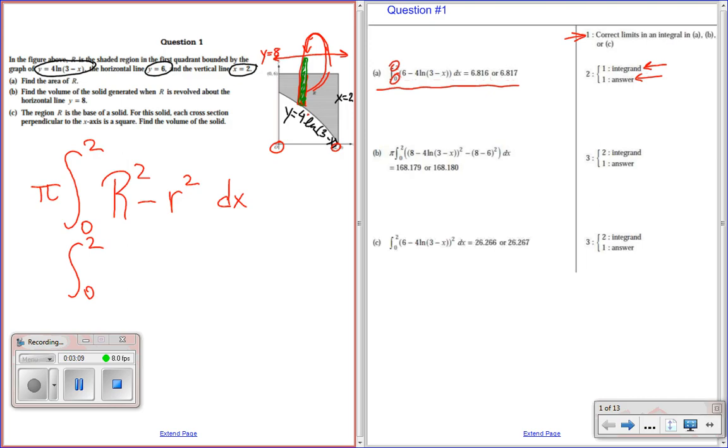Big R squared is going to be upper minus lower. So, it's going to be 8 minus 4 natural log of 3 minus x. That whole thing's squared. And then the small square is just this section in here. The small section is this section right in here. That's the part we're taking out. So, we don't want to include that in the volume. So, that's the small R. So, it's 8 minus 6 squared. And it's all in respect to x.